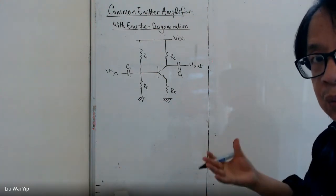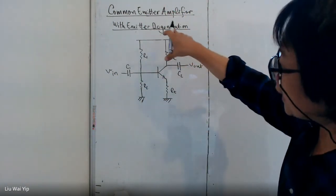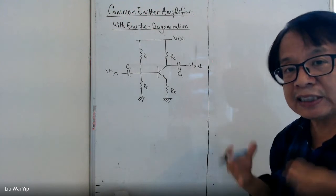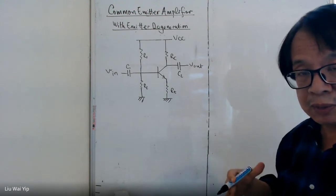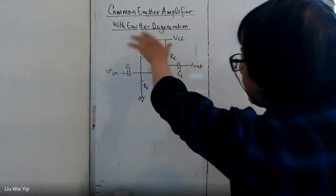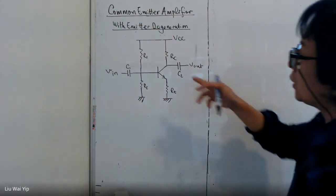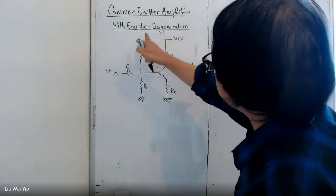Today, I'm going to show you how to resolve this kind of circuit using T model. T model will be much easier. To start with, let's start with the general common emitter amplifier with emitter degeneration.